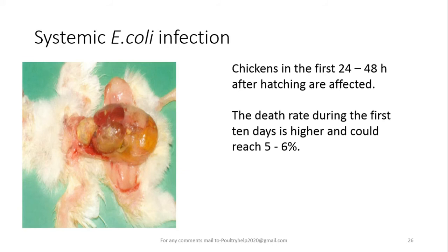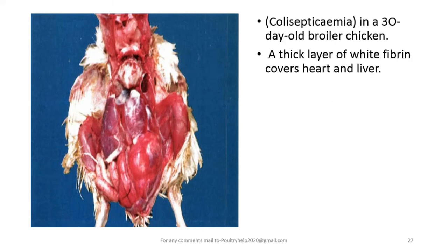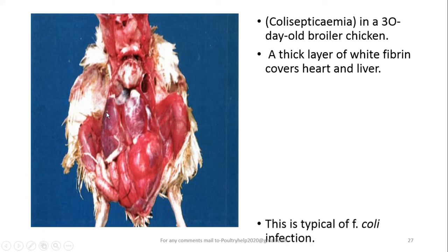Chickens in the first 24 to 40 hours of life can be affected, and the mortality rate can be four to six percent. The most important postmortem change associated with systemic disease is E. coli septicemia. In this 30-day-old broiler chicken, a layer of white fibrin covers the organs — this fibrin covering is typical of E. coli infection.